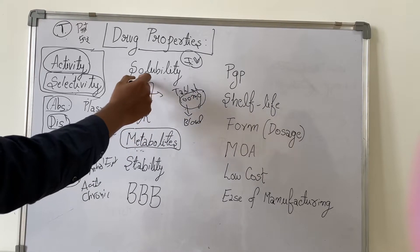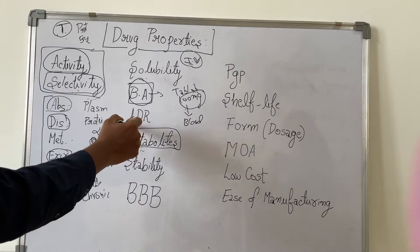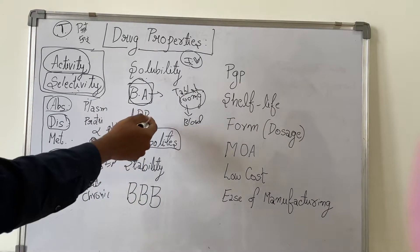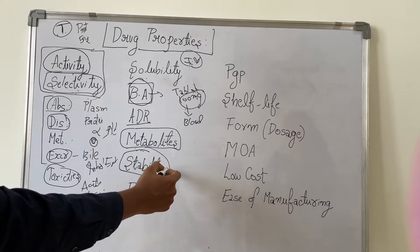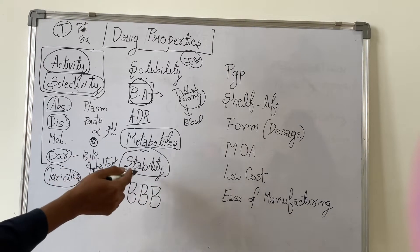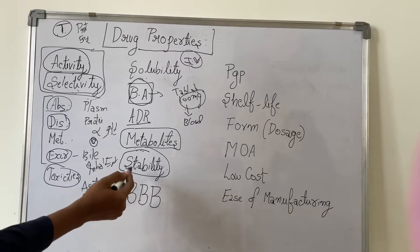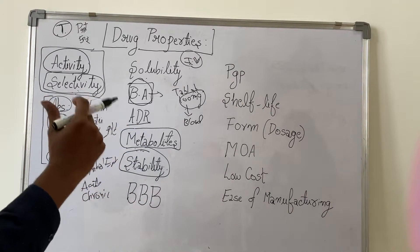Whereas other routes of administration will have a difference in this bioavailability. We will assess this bioavailability also for the drug product. Next one is adverse drug reaction. This will be assessed during clinical trials. Stability of the drug product - how stable is the drug product? Because the drug may be stored for one year, two years, depending on the expiry date.